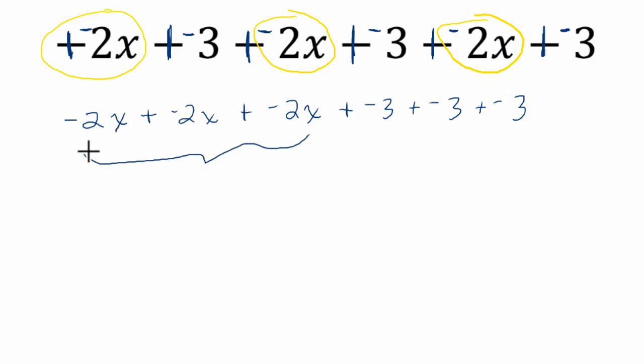So now the addition of these 2, 4, 6 groups of negative x is simply negative 6x. And the grouping of these three groups of negative 3 is the same as negative 9. Right? Having three negatives three times makes nine negatives.